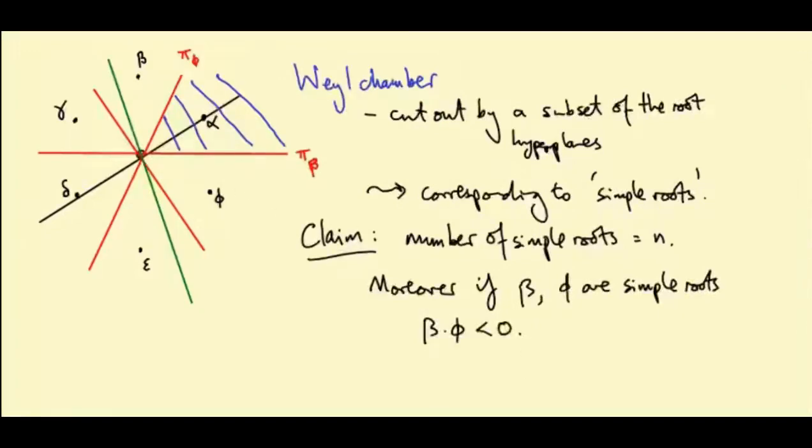So you can see that in this example, if I dot beta and phi, I'm basically taking the vertical component of phi, which is negative.